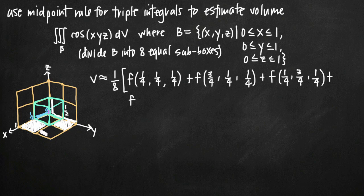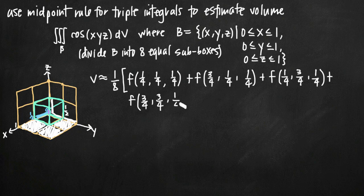For the fourth cube on the bottom row, x is halfway between 1/2 and 1, giving x = 3/4; y is halfway between 1/2 and 1, giving y = 3/4; and z is halfway between 0 and 1/2, so z = 1/4. We've now covered the entire bottom half of the larger cube. Notice z is always 1/4 for the bottom row, and we just alternate x and y between 1/4 and 3/4 to get all four combinations.